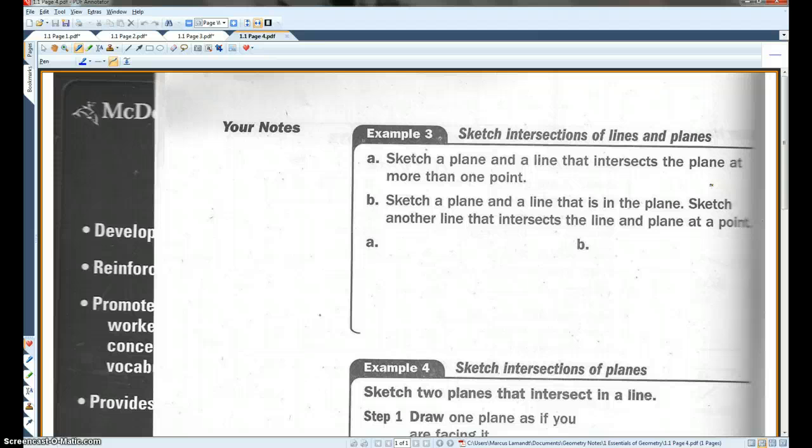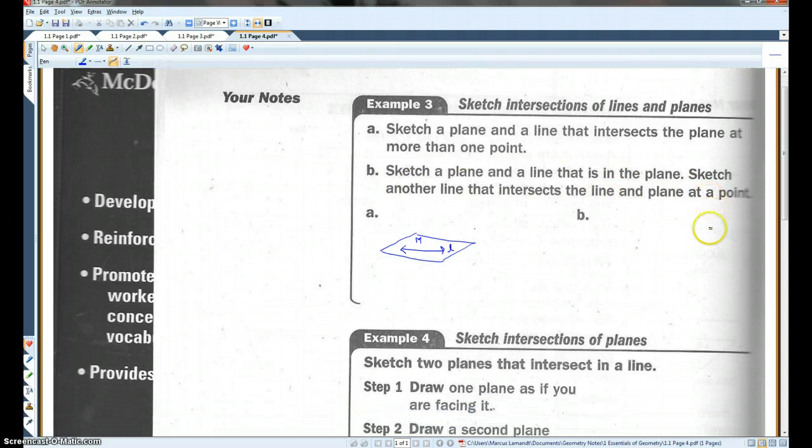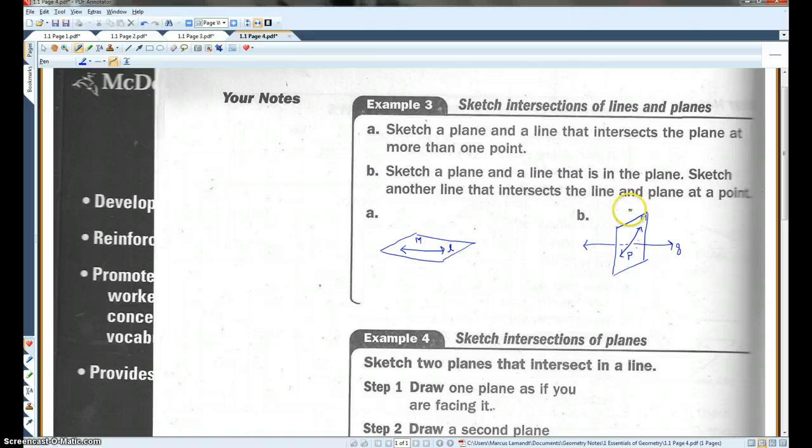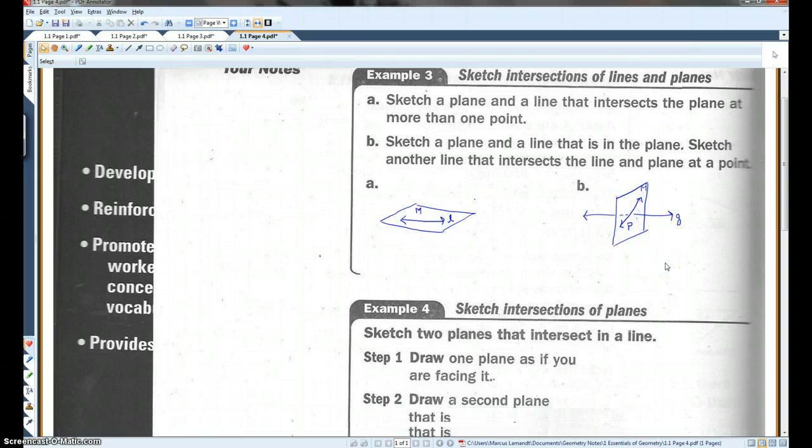Example three. Sketch a plane and a line that intersects the plane at more than one point. Okay. So, let's see here. The only way for a line to intersect a plane at more than one point is for the line to actually lie inside that plane. Okay. Sketch a plane and a line that is in the plane. Sketch another line that intersects the line and the plane at a point. All right. So, this would be one way to draw it. The line intersects the line and the plane at this point here. Okay.